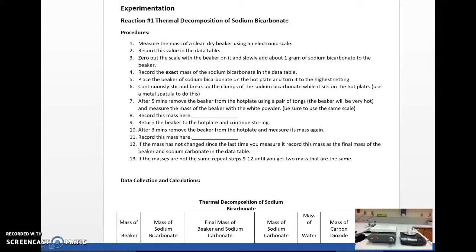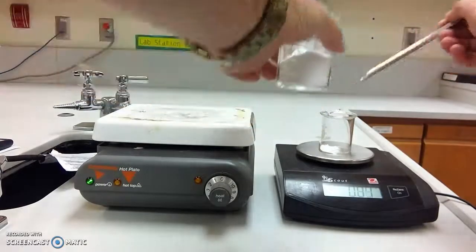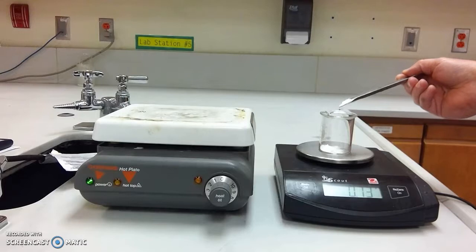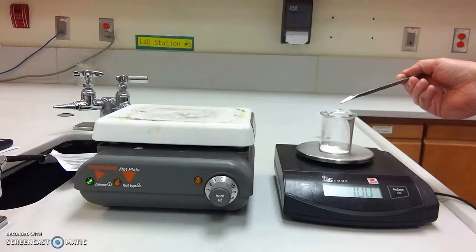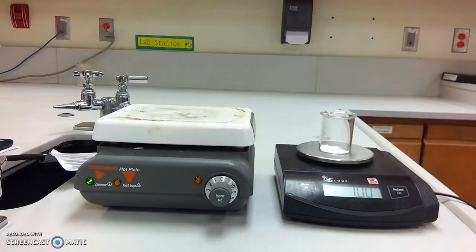Then step three, zero out the scale. So I'll go ahead and zero it out. And I'm going to slowly add one gram of sodium bicarbonate to the beaker. Always want to make sure that you are paying attention to what's around you, your workspace. You don't want to spill. You just want to slowly add it in there until you get about one gram. I got it to 1.00 grams, so that's good.